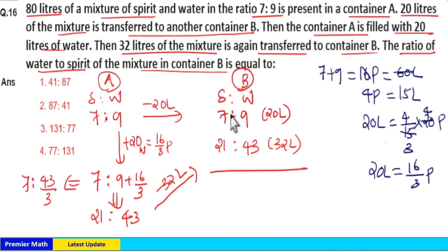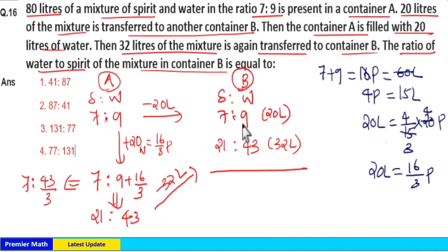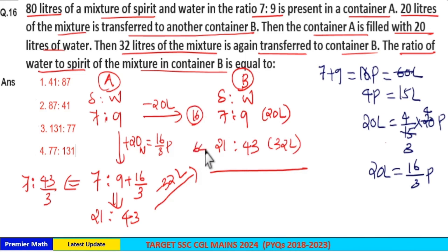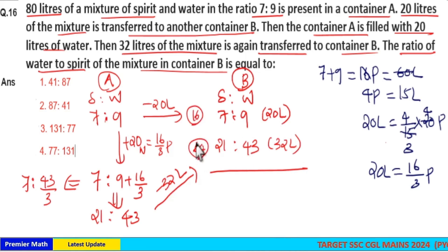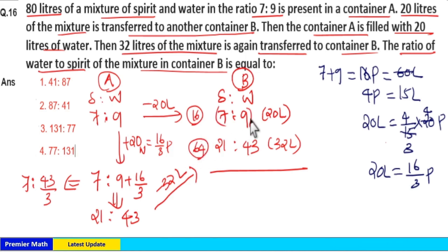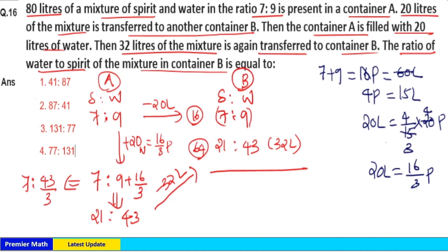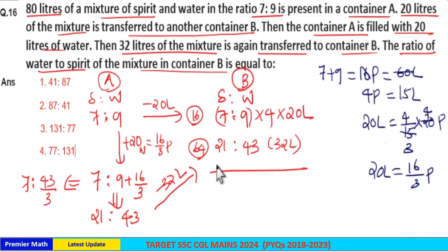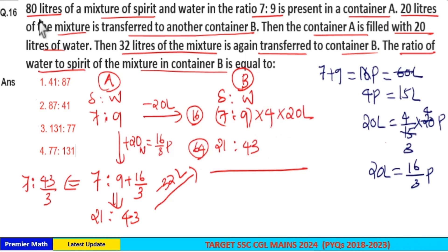Now we have to find the total ratio parts in container B. Add 7:9 (which is 20 liters) and 21:43 (which is 32 liters). The total parts are: 7 plus 9 equals 16 parts, and 21 plus 43 equals 64 parts. Take the LCM of 16 and 64, which equals 64. Multiply the first ratio by 4 (since 16 times 4 equals 64), and multiply the second ratio by 1.